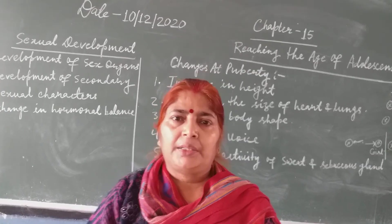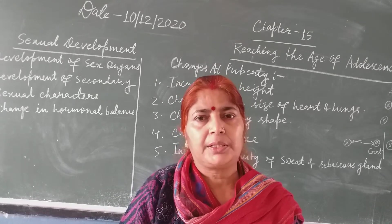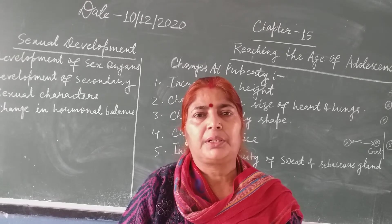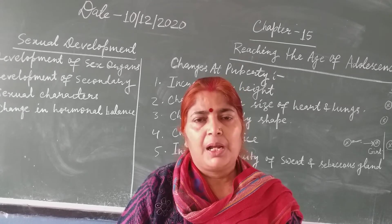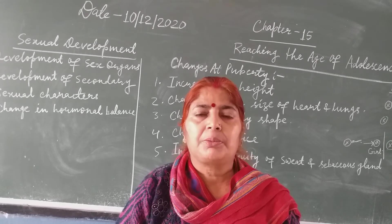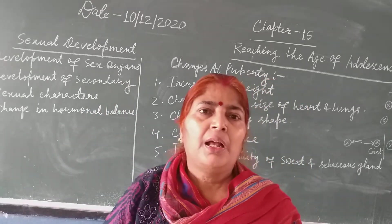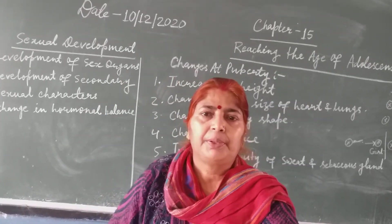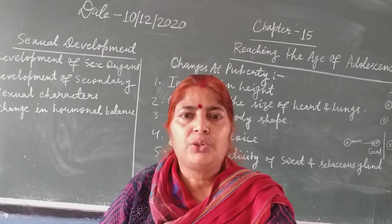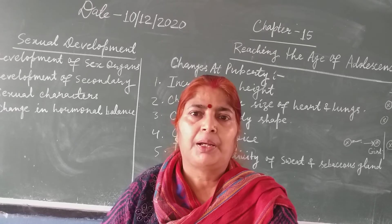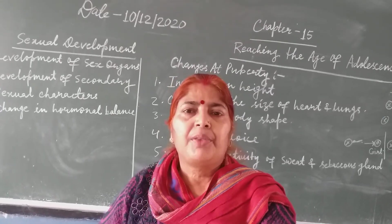The next change is development in the sex organs. In males, the testis is the male reproductive organ; it becomes mature and starts to produce sperm. In females, the ovary becomes mature and starts to produce ovum or egg. The size of the sex organs increases, they become mature, and they start to produce gametes — sperm is produced by the testis and egg is produced by the ovary.